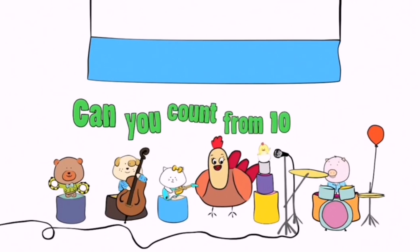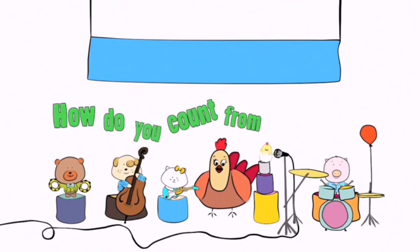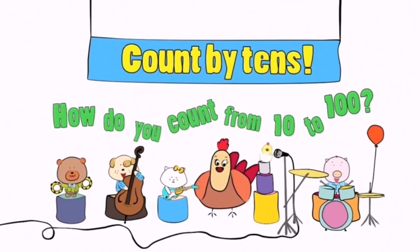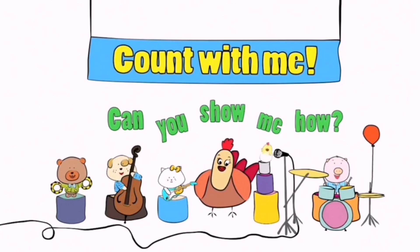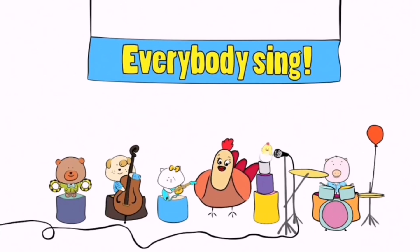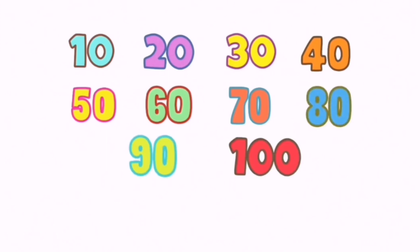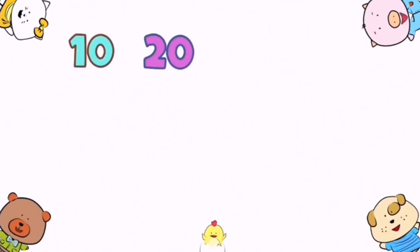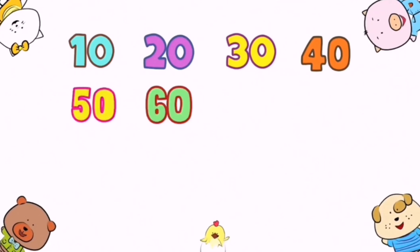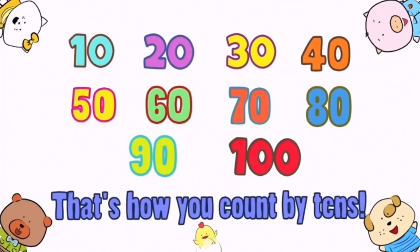Can you count from 10 to 100? Yes I can! How do you count from 10 to 100? Count by tens: 10, 20, 30, 40, 50, 60, 70, 80, 90, 100. That's how you count by tens. Ten, twenty, thirty, forty, fifty, sixty, seventy, eighty, ninety, one hundred. That's how you count by tens.